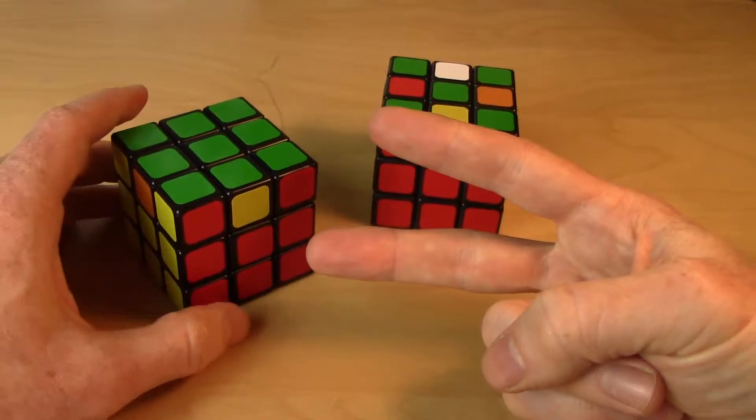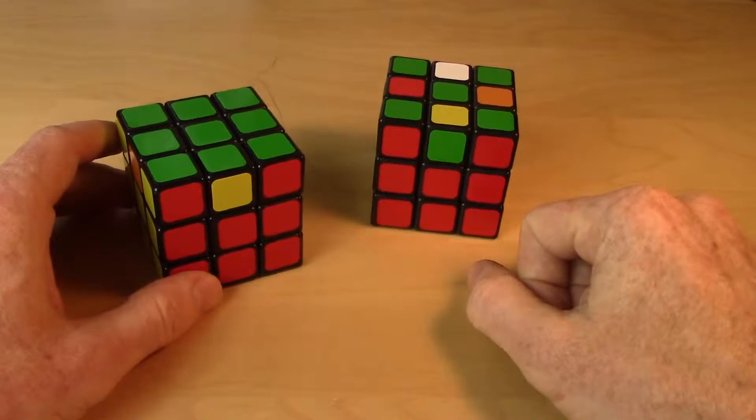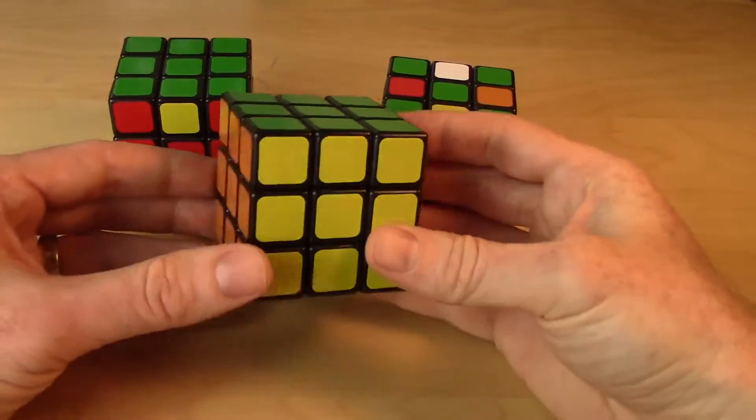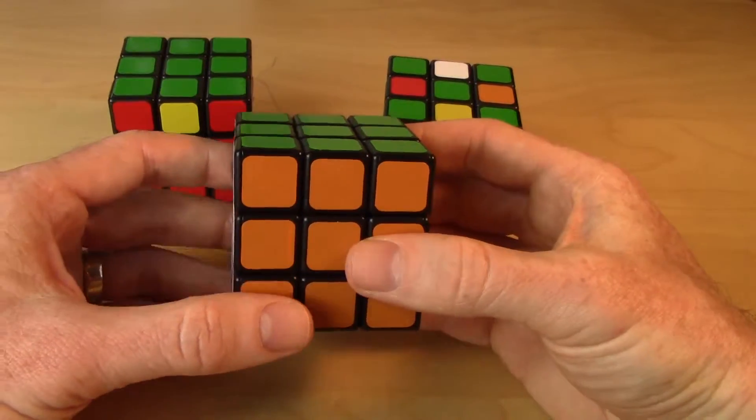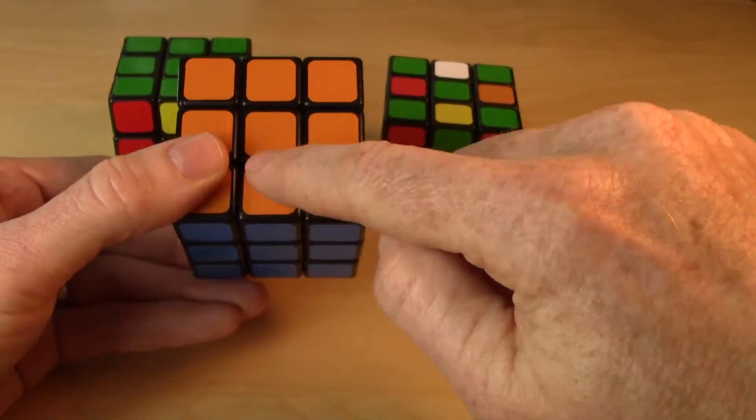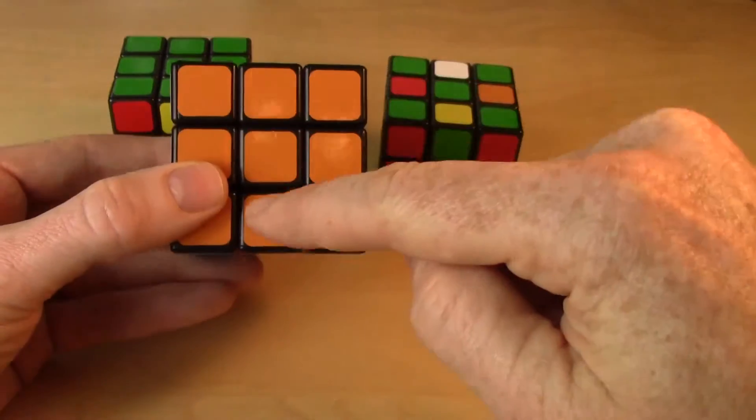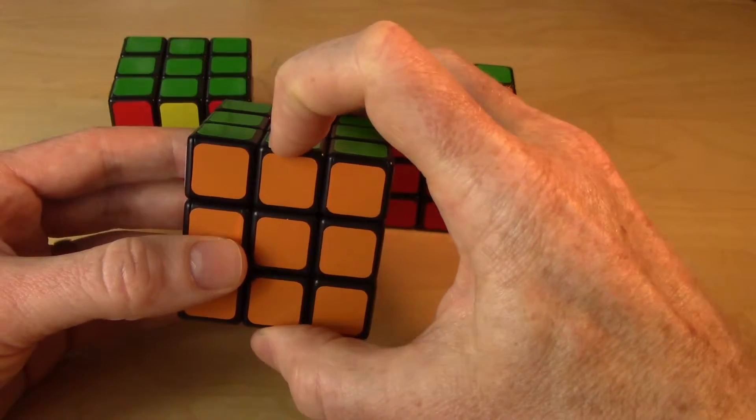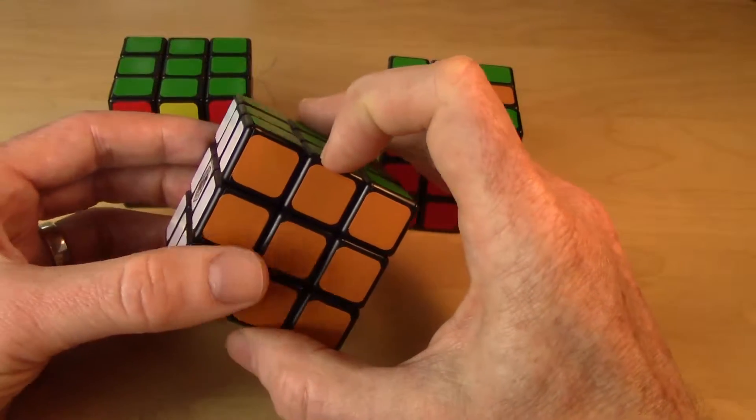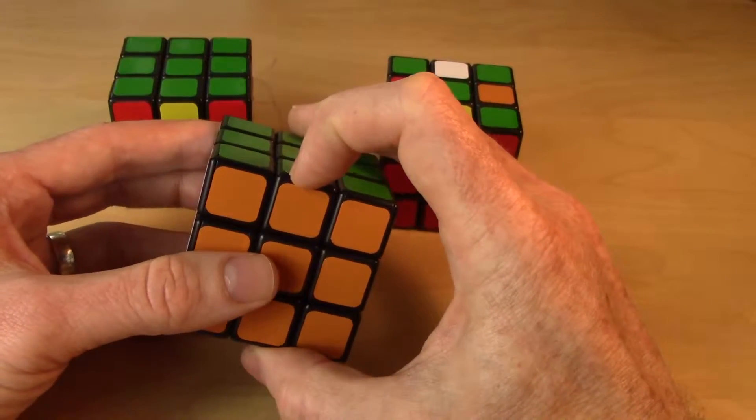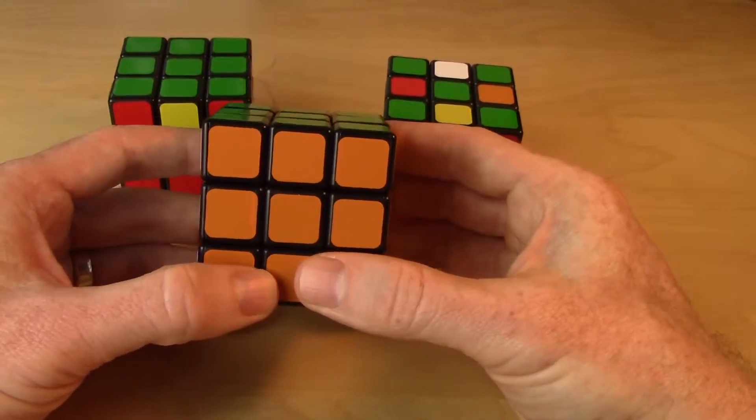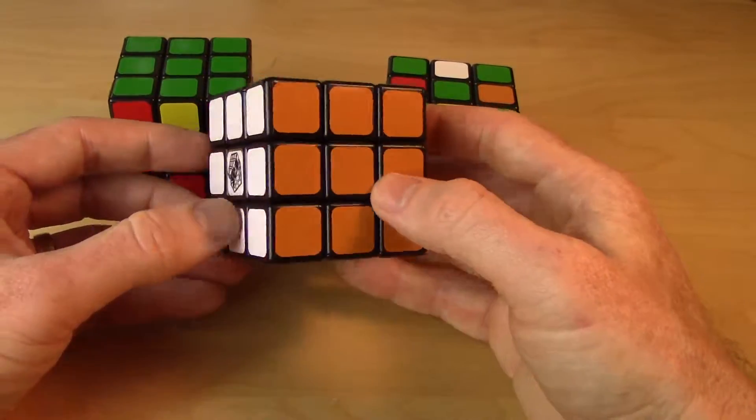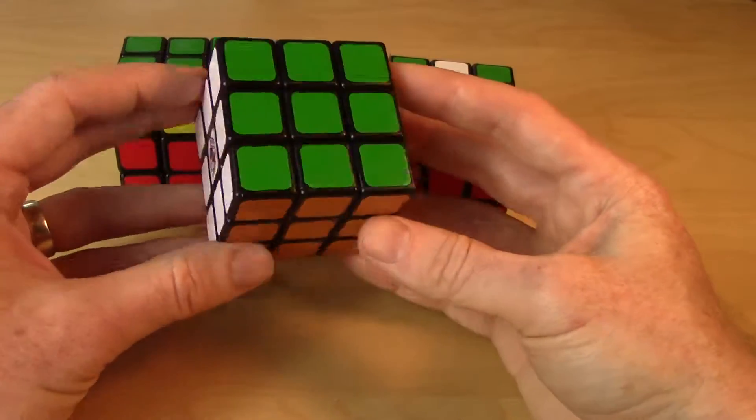Now we're only going to use two move sequences. The first move sequence is this edge 3-cycle that moves three edges around. If you look below the video you'll see the edge 3-cycle listed there. If you're on YouTube, just go to the description and click on the link to my website where this video is listed along with the move sequences in pictorial form.